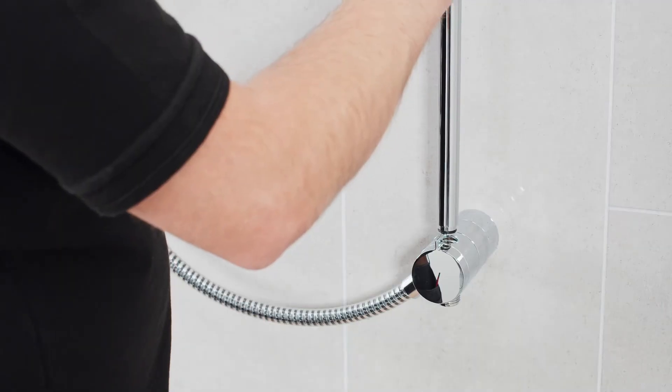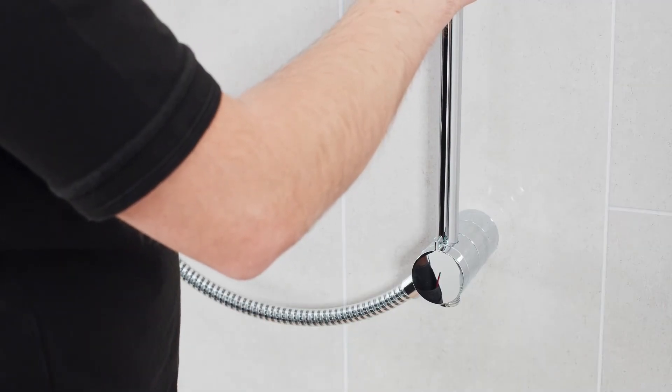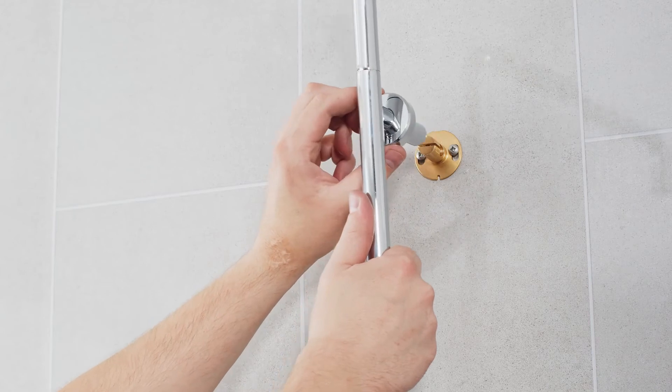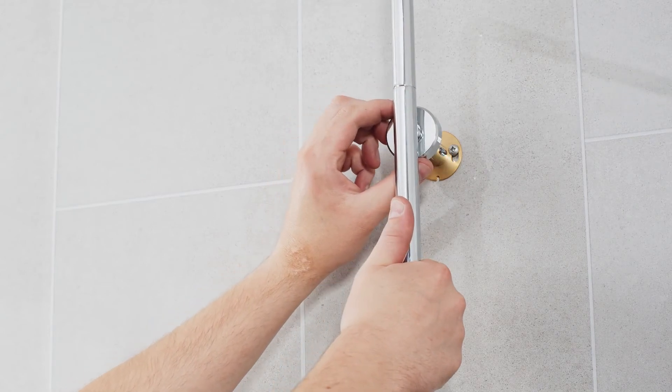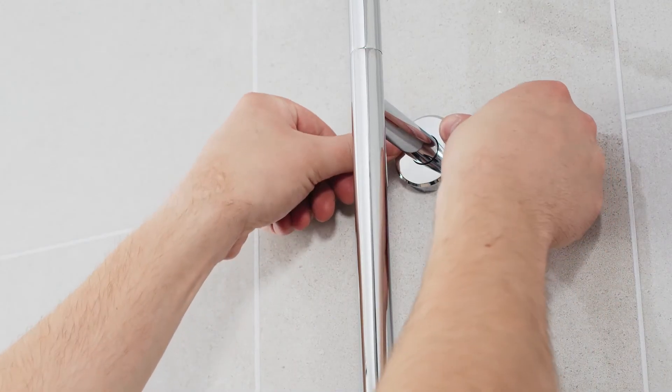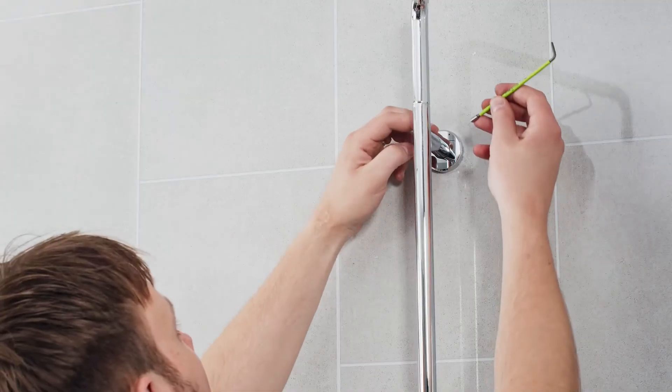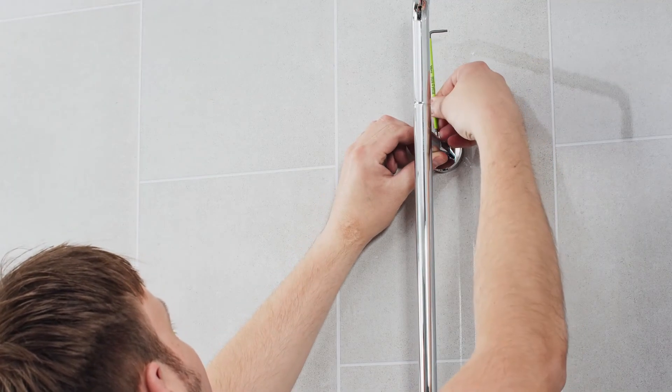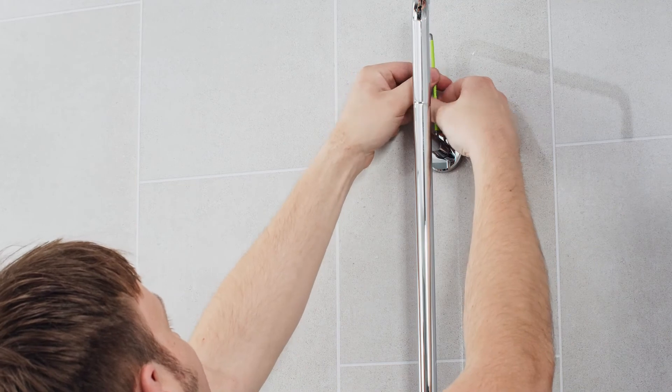The rail assembly can then be reinserted into the diverter to be secured into place. Place the back plate cover on the rear of the rail assembly before securing and clip into place for a flush finish. The grub screw can then be tightened to ensure that the assembly is fully secure.